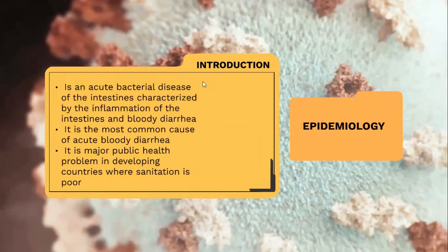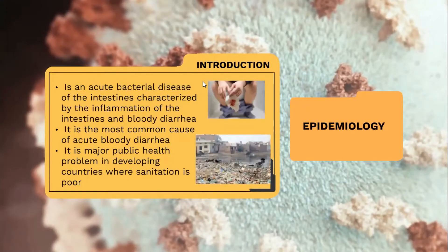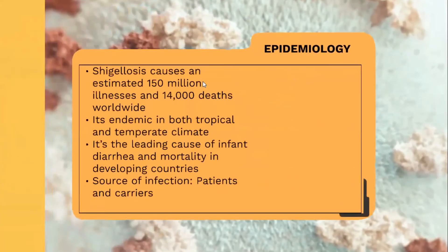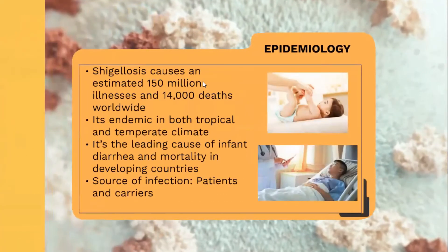Bacillary dysentery is an acute bacterial disease of the intestines characterized by inflammation of the intestines and bloody diarrhea. It is the most common cause of acute bloody diarrhea and it is a major public health problem in developing countries where sanitation is poor. Shigellosis or bacillary dysentery causes an estimated 150 million illnesses and 14,000 deaths worldwide. It's endemic in both tropical and temperate climates and is the leading cause of infant diarrhea and mortality in developing countries.